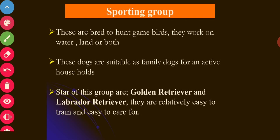The first is the Sporting Group. Animals in this group are bred to hunt game birds. They work both on water and land. These dogs are suitable as family dogs, particularly for active families, since they are very active and need care. The stars of this group are the Golden Retriever and Labrador Retriever, which is very common in India and found in almost every part of the country.